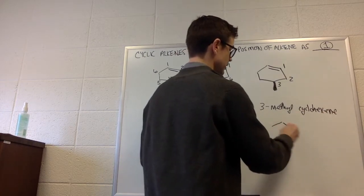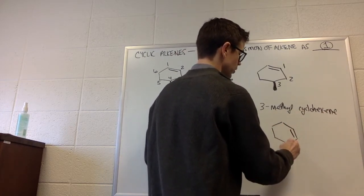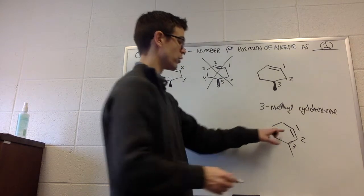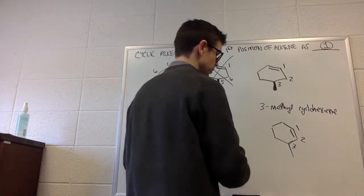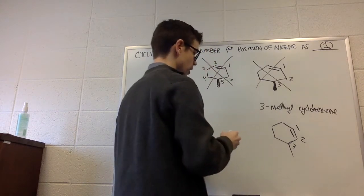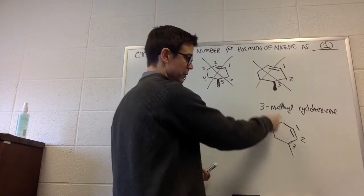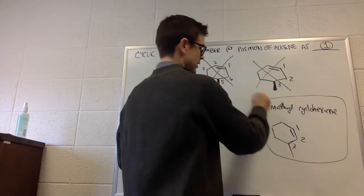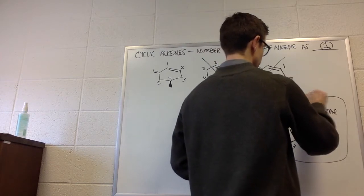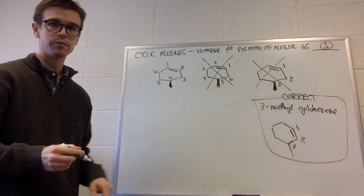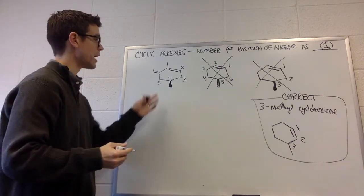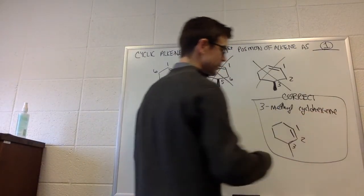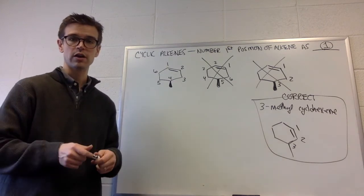they're going to be expecting that the structure would look like that, because they would expect that you would say one, two, three, giving your alkene both positions one and two. So that would not be the way to number. If it was this molecule, then that would be correct. So three methyl cyclohexene would be correct for that. So this is correct naming. But that molecule is not that molecule. Okay, so this is the numbering that we have to do around the ring. We never have to specify hex-one-ene because it's assumed that position one is where the alkene is on the ring.